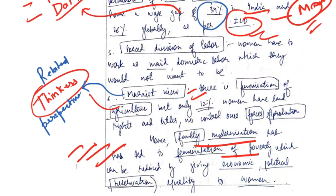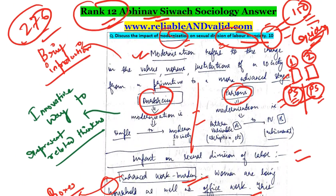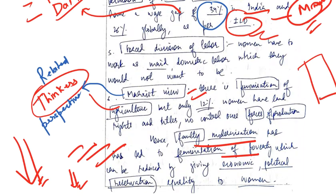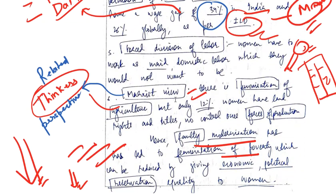There are multiple ways of concluding an answer, and this is one of them. If you want to go through the answers, the links are given in the description box below. For any query, feel free to get in touch — contact details are in the description. Give your best, and make sure that when you read newspapers, you look at the news through the lens of sociology so that you gradually develop a sociological perspective, which will help you attempt application-based questions in the actual exam. Any query about how to incorporate current affairs in your answers — feel free to get in touch. Thank you so much.